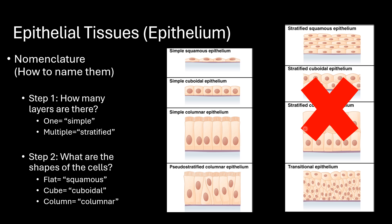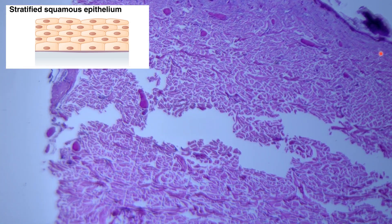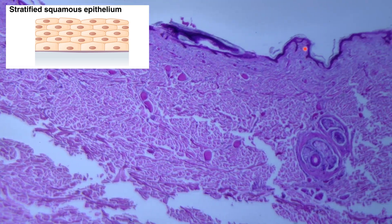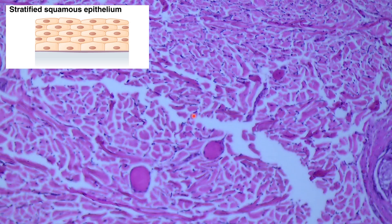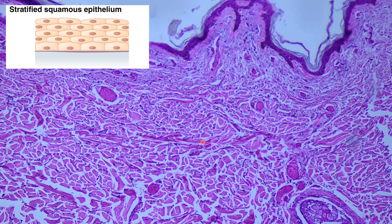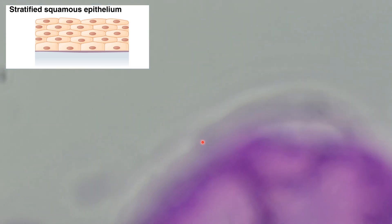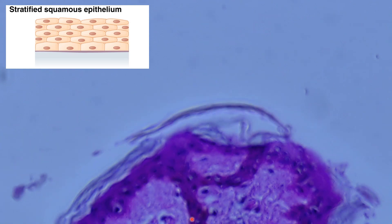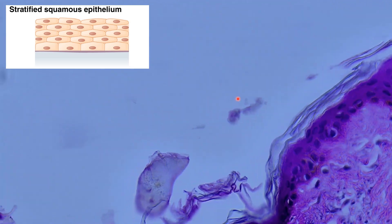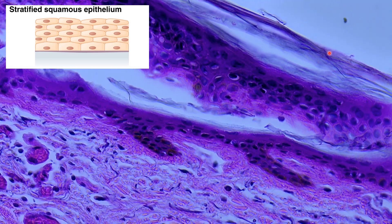Let's start by identifying stratified squamous epithelium. This is a slide of human skin. When looking at these samples through a microscope, it's helpful to orient yourself to what you're looking at. Here at 40 power, the epithelium — the epidermis — is the darker part at the very top. The underlying skin is the dermis, which contains a lot of connective tissues. Zooming to 100 power, we can see some glands, some vasculature, and mostly dense irregular connective tissue containing a variety of different cells and extracellular matrix products.